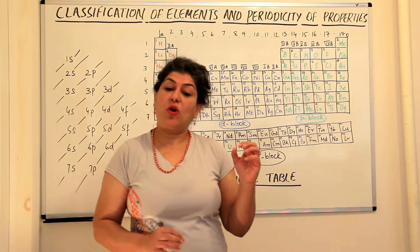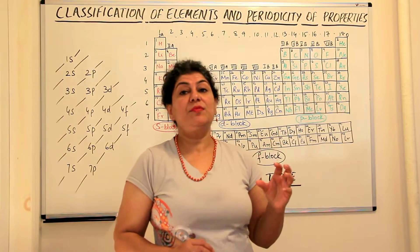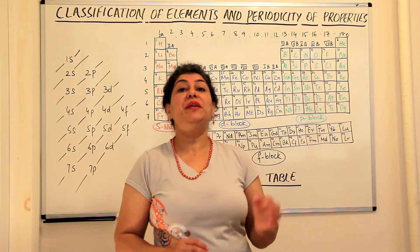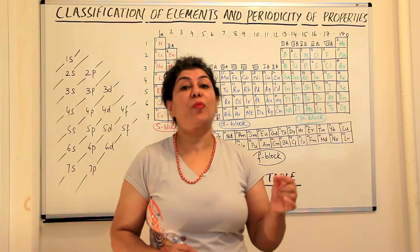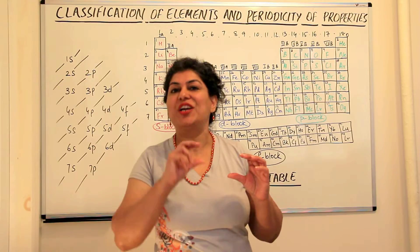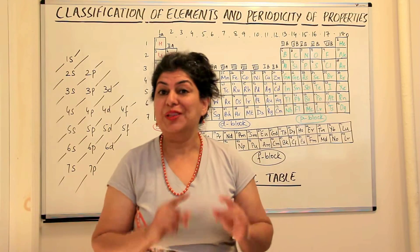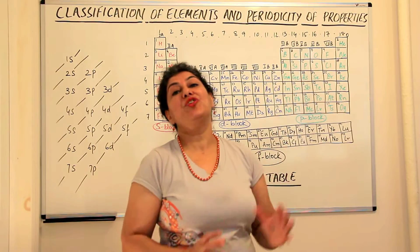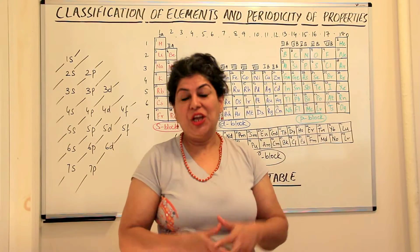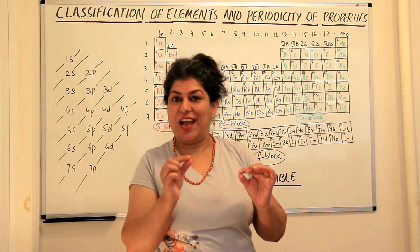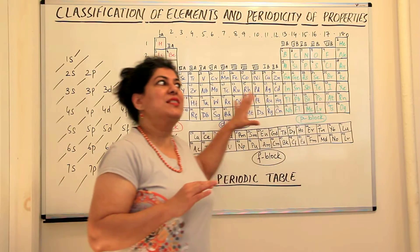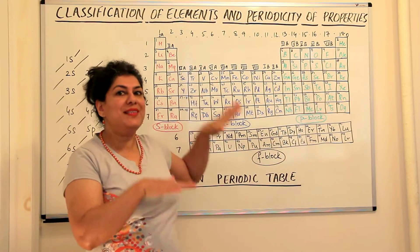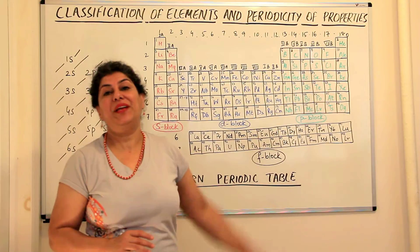Mendeleev's periodic law stated that the properties of elements are a periodic function of their atomic masses. So he changed the atomic masses and he said no, the properties of elements are a periodic function of their atomic numbers. So this subtle change actually was where we had reached the basis of modern periodic classification.